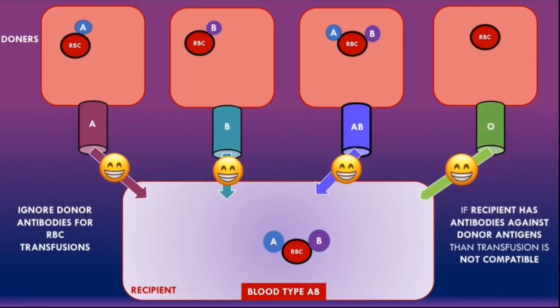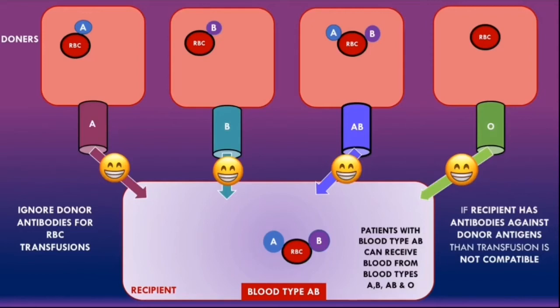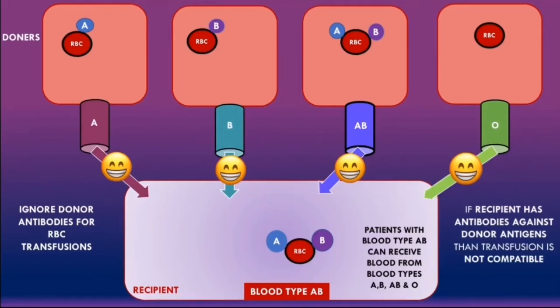In summary, patients with blood type AB can receive blood from blood types A, B, AB, and O. This is why patients with blood type AB are called universal red blood cell recipients, because they can receive blood from all ABO blood groups.